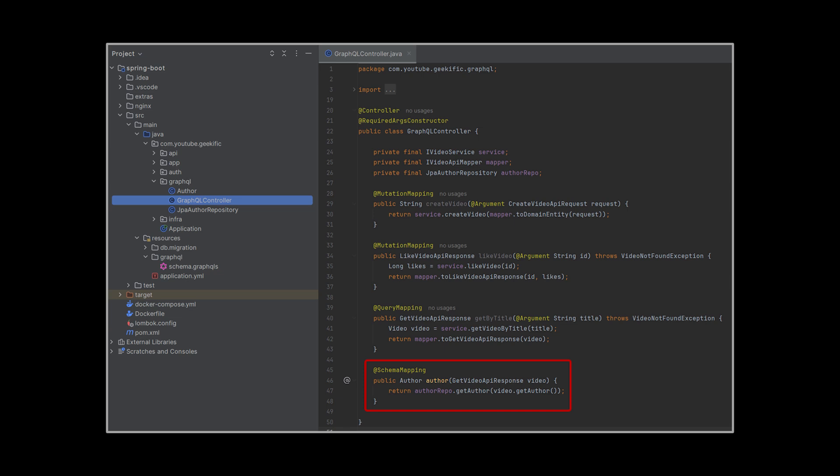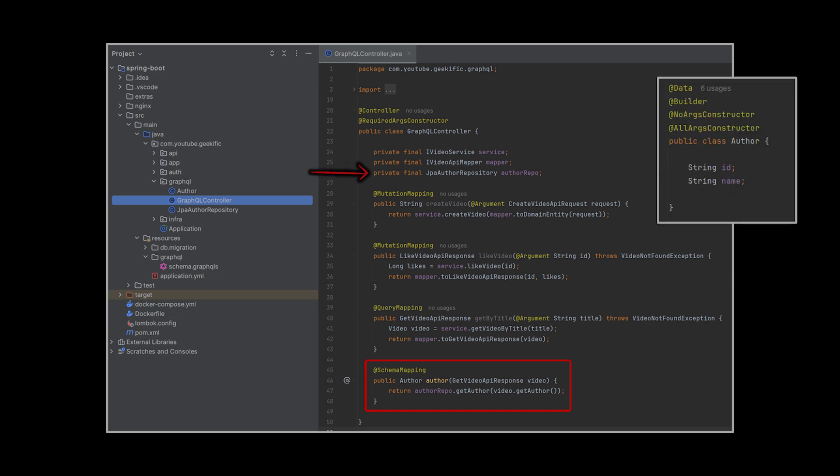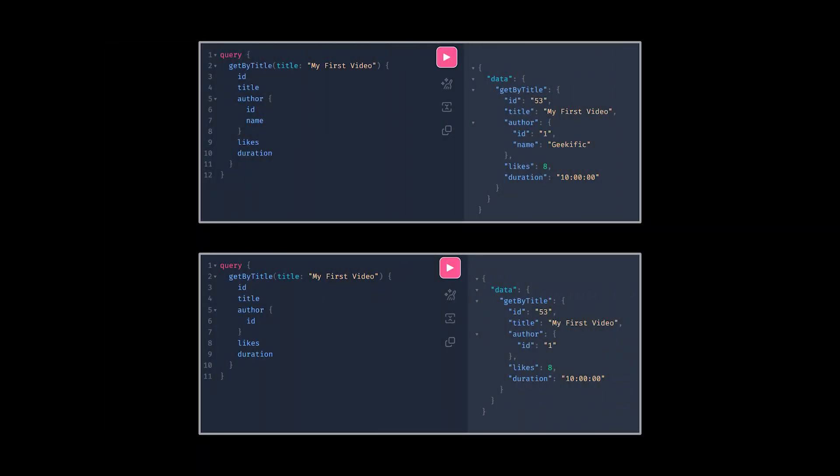This method takes in a video response and returns an author object. Assuming we have a repository from which we fetch authors, this method will help us map the author's name present in the response to the actual object it represents, fetched from the database.